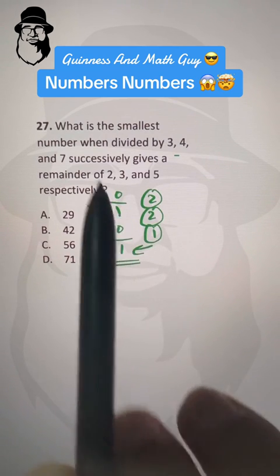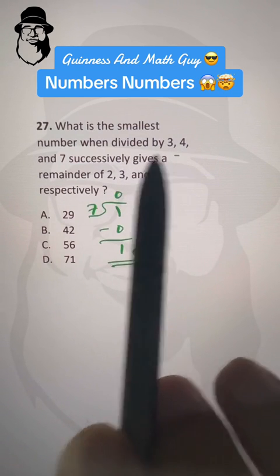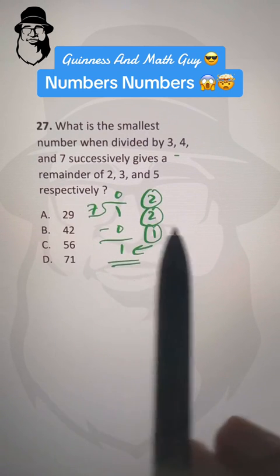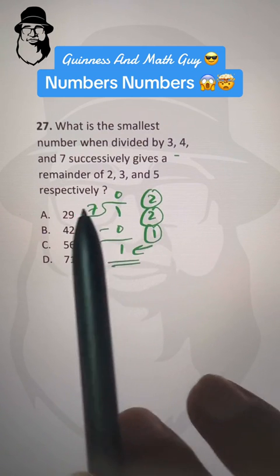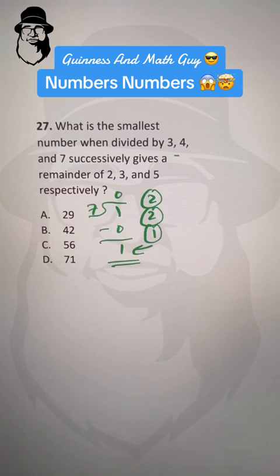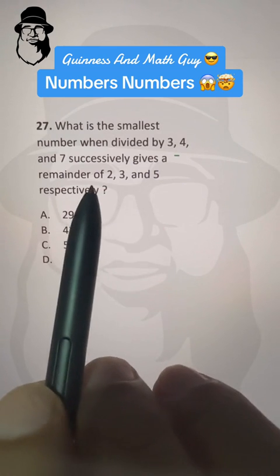So if the question is what is the smallest number when divided by 3, 4, and 7 successively gives a remainder of 2, 2, and 1 respectively, then our answer will be 20. Now you understand what I mean by the word successively here.